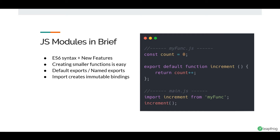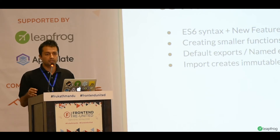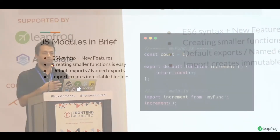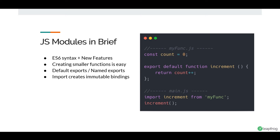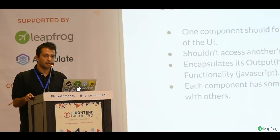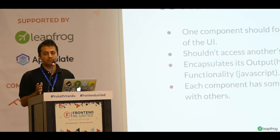ES6 gives us new, better syntax to use modules. We can export variables, functions, and classes, and we can import the same things from another component, file, or module. The imports are usually immutable bindings. Since we have been using modules for a long time, it changed into file-based modules.